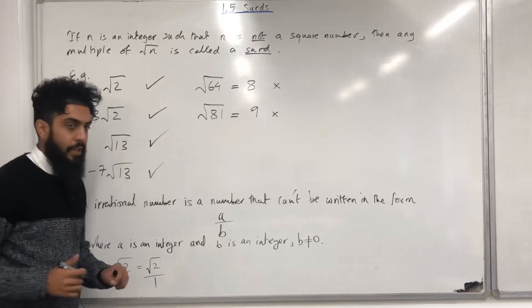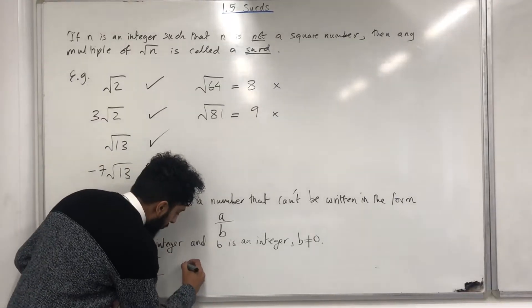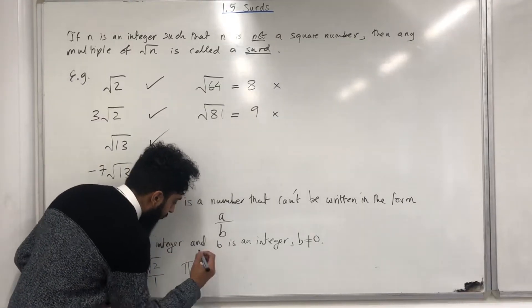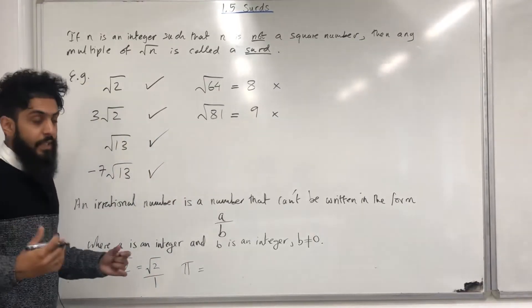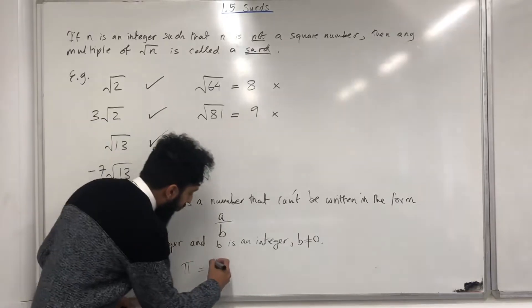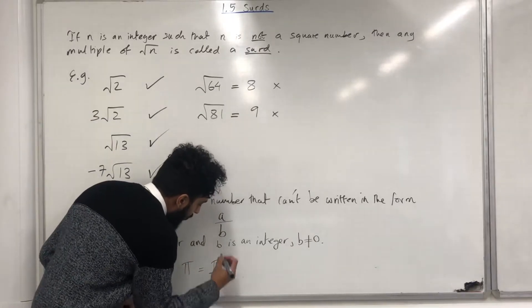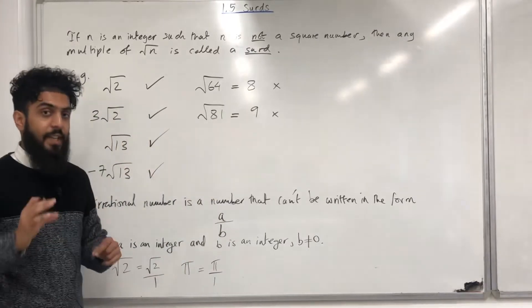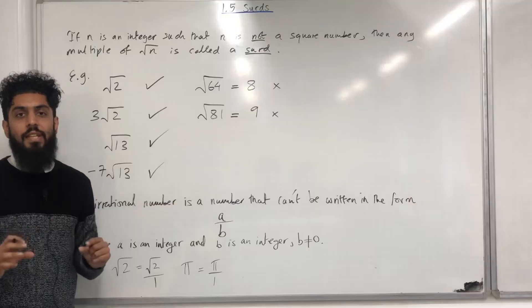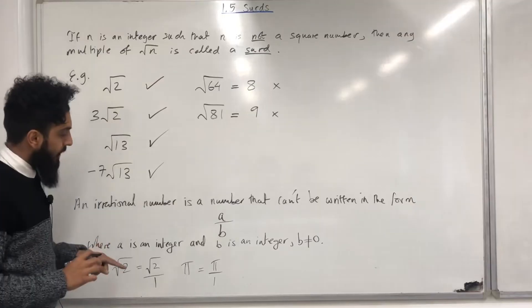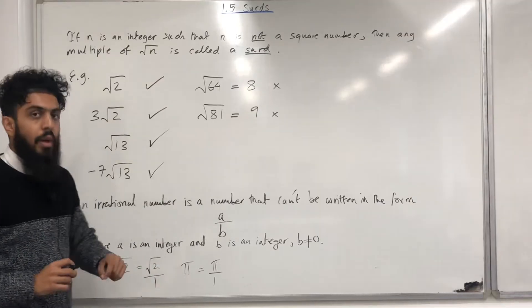Another example: pi. Pi can be written as pi over 1. 1 is an integer, but pi is not an integer, hence pi is an irrational number.